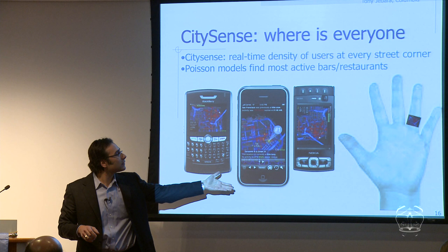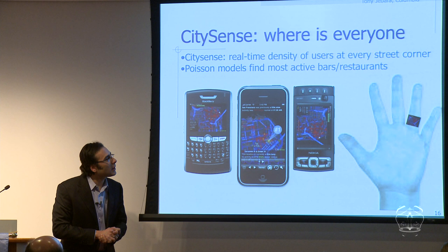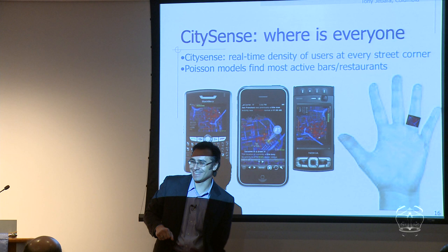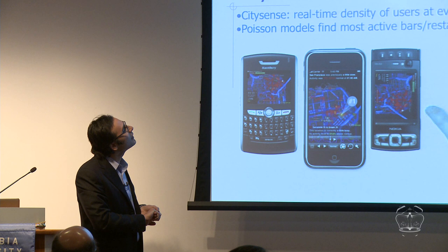CitySense is available for BlackBerry phones, iPhones, and Nokia phones. You can point your browser to www.citysense.com and download it — it's completely free. What we do is show you the most active bars and restaurants right now. Of course, it's not completely free because you have to accept that we'll get your data as well when you use it — there's a catch. But you can always delete your own data if you want to remove it from the system.